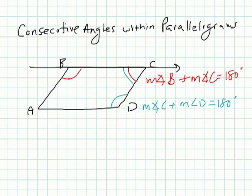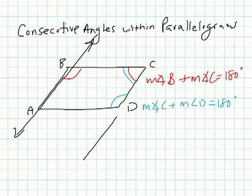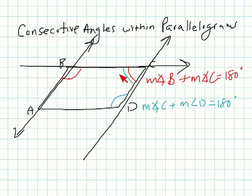Looking at the other set of parallel lines with the other transversal, B and C are same-side interior angles, and that postulate says they will add to 180 degrees. This will be helpful because if you knew one angle was 100 degrees, you could use algebra to figure out that the other must be 80 degrees.